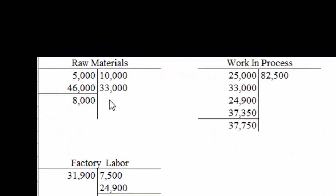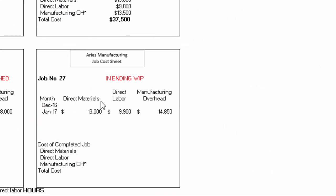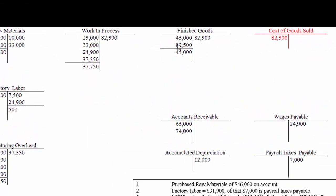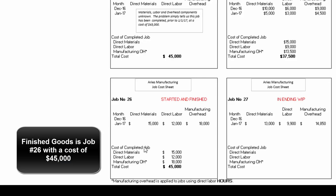Let's look at the balances to cement our understanding. The $8,000 in raw materials is in Ralph's storage area — materials ready for next month's work. The $37,750 in work in process is job 27 on the factory floor: $13,000 in materials, $9,900 in labor, and $14,850 of applied overhead — but that job isn't finished. The $45,000 left in finished goods is job 26, which we started and finished in January but hasn't been sold yet.